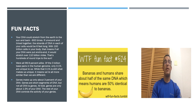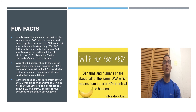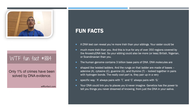It means we're all more similar than we are different. Another fun fact: genes make up only about 3% of your DNA. Genes are short segments of DNA, but not all DNA encodes genes. The rest of your DNA controls the activity of your genes. Also, a DNA test can reveal that you're more Irish than your siblings — your sister could be much more Irish than you. This is true for any of the over 350 regions covered by the Ancestry DNA test, so your sibling could also be more or less British, Nigerian, or Scandinavian than you are.